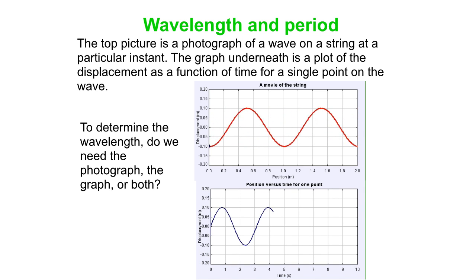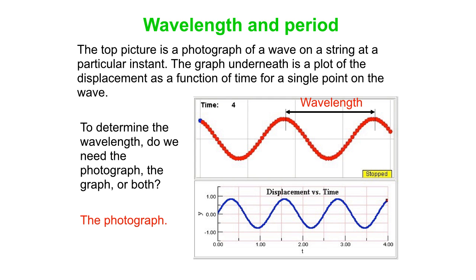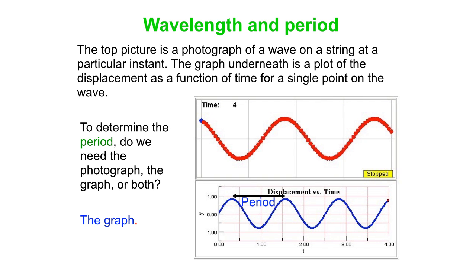Well, there's the graph, so think about what we need, and of course the wavelength can just come straight off the photograph. Well, is the graph good for everything, anything? What about determining the period? That comes from the graph. So wavelength we get from a photograph of the wave itself, frozen in time, and the period we get from plotting what one little point on the wave does as a function of time.